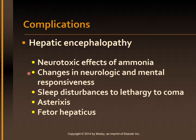Later neurological symptoms include altered level of consciousness, impaired thinking, and neuromuscular problems. A characteristic manifestation of hepatic encephalopathy is asterixis, or flapping tremors — when asked to hold the arms and hands stretched out, the patient is unable to hold the position and there will be a series of rapid flexion and extension movements of the hands. Fetor hepaticus is a distinctive breath odor of chronic liver disease characterized by a fruity, musty smell, resulting from the liver's inability to metabolize and detoxify mercaptan, which is produced by the bacterial breakdown of methionine, a sulfurous amino acid.